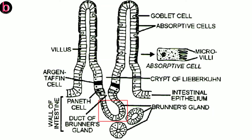One that is very important is enterokinase. This enzyme never plays a direct role in any kind of digestive activity, but is involved in the activation of other enzymes. The second part of the intestinal gland is Brunner's gland.